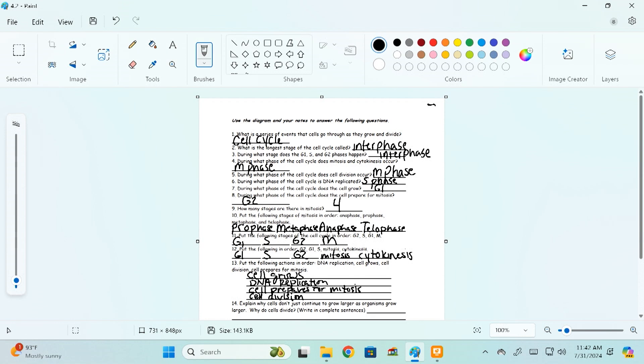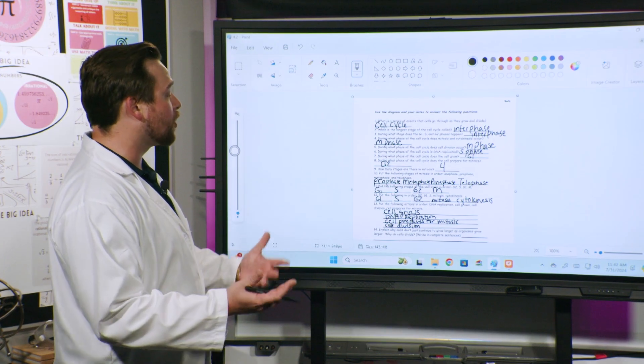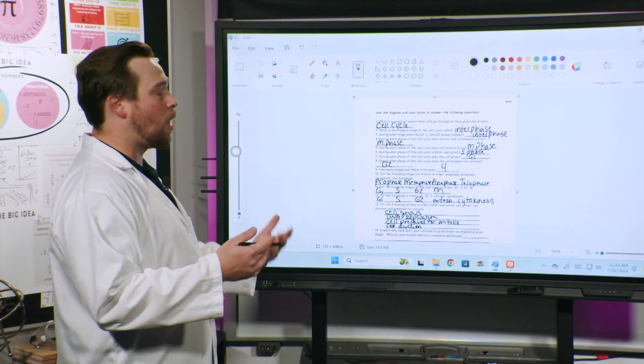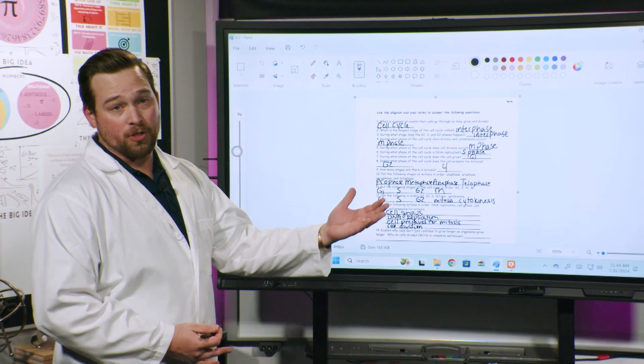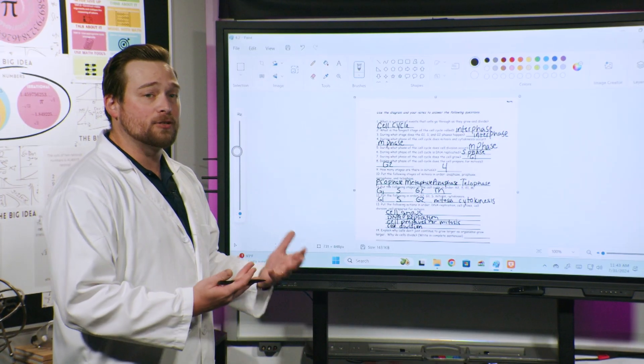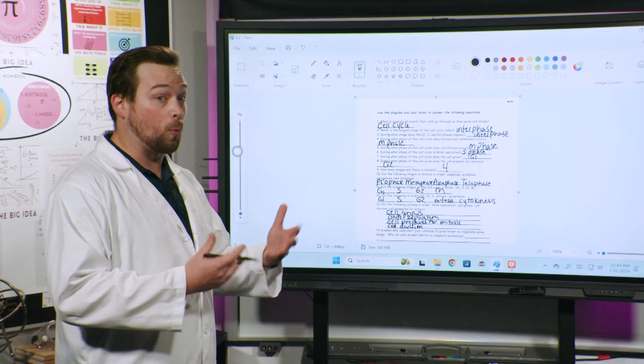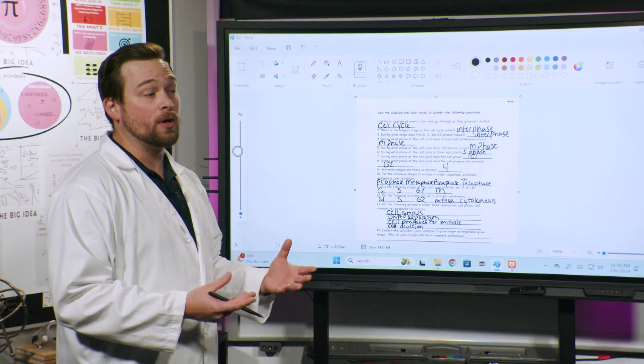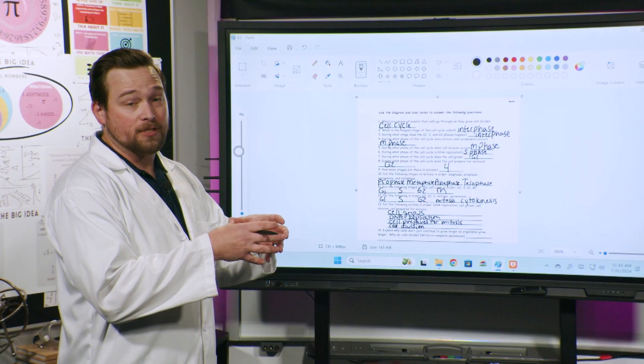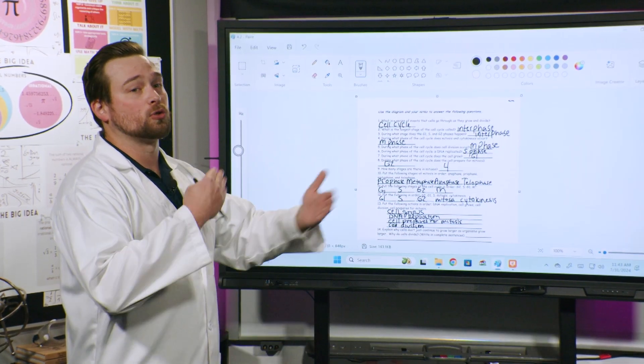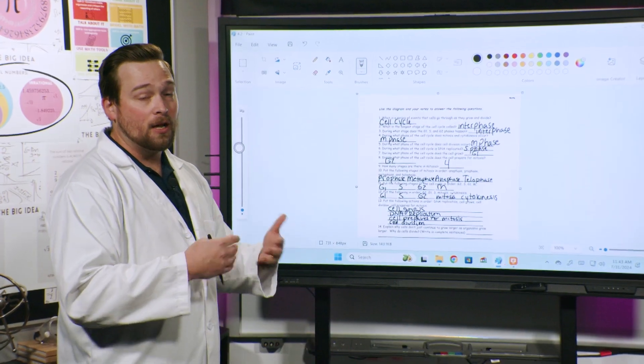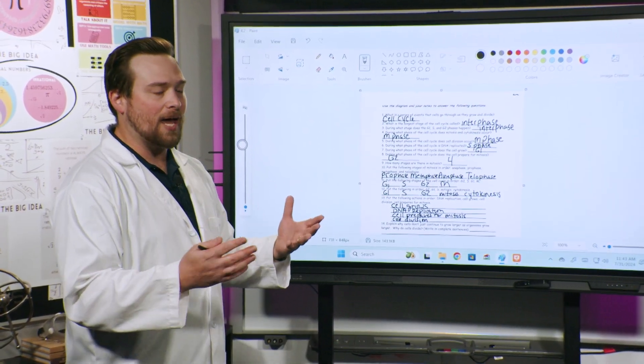Okay, great job. So here's the last one. Number 14 is asking, explain why cells don't just continue to grow larger as organisms grow larger. Why do cells divide? So for this, you're actually going to have to think back to something we talked about last time. I kind of told you all that cells after a certain size, they just don't work the way that they're supposed to. Basically, the area of the cell grows a lot faster than the perimeter does. So it can't control what's coming in and out of it quite as well. So anything like that's going to work.